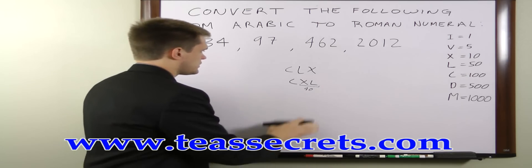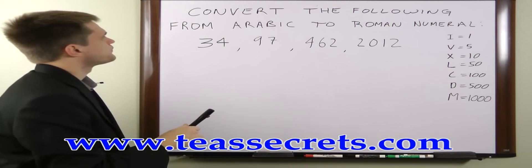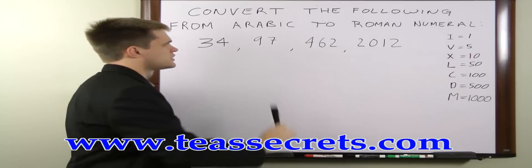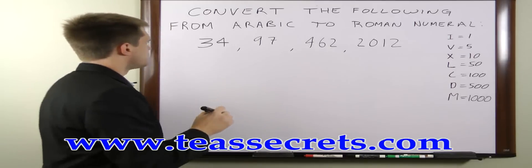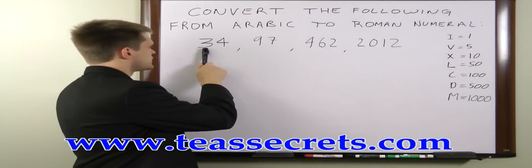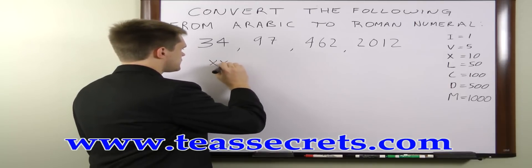Let's go ahead and work these problems here. We have to convert all these numbers into Roman numerals. 34, all we have to do is add up three tens to get the 30,